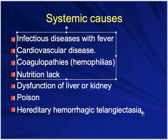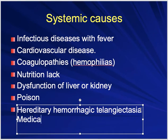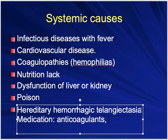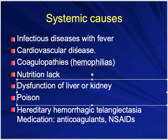Medications are a very important systemic cause. Anticoagulant medications increase the risk of bleeding. Liver failure affects clotting factor production since all clotting factors are formed in the liver. Kidney failure causes loss of proteins. Hematological problems also contribute to epistaxis.